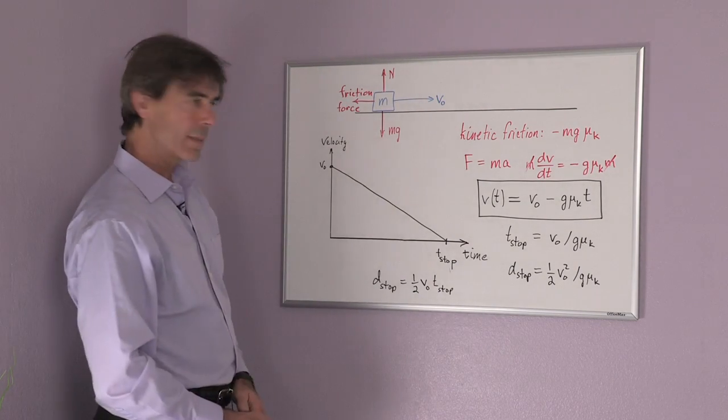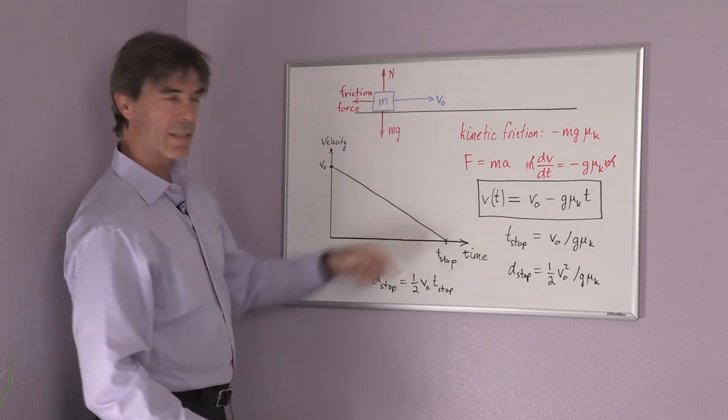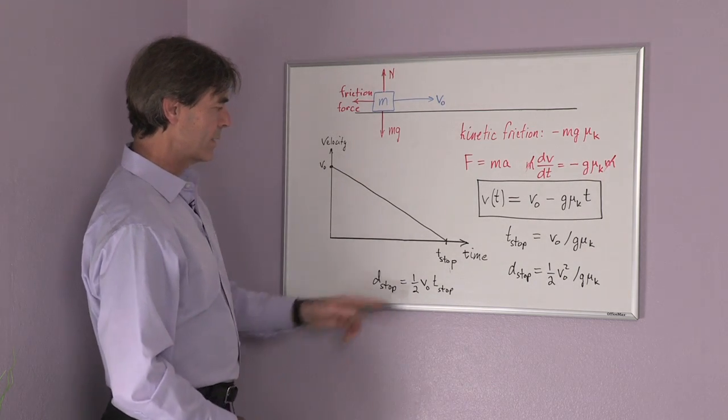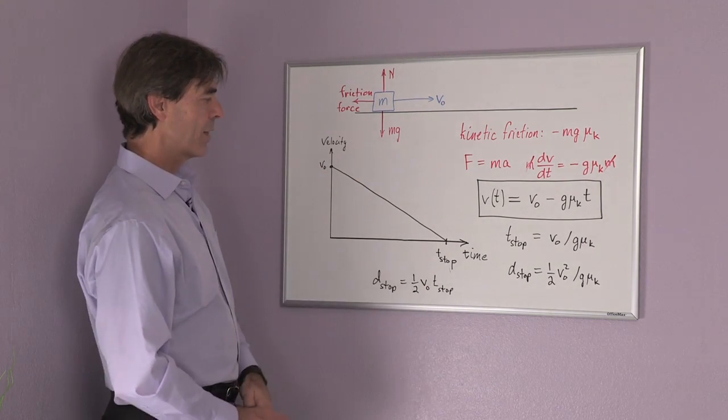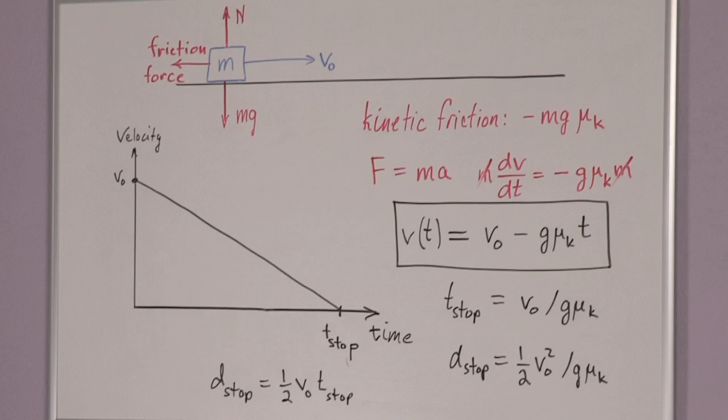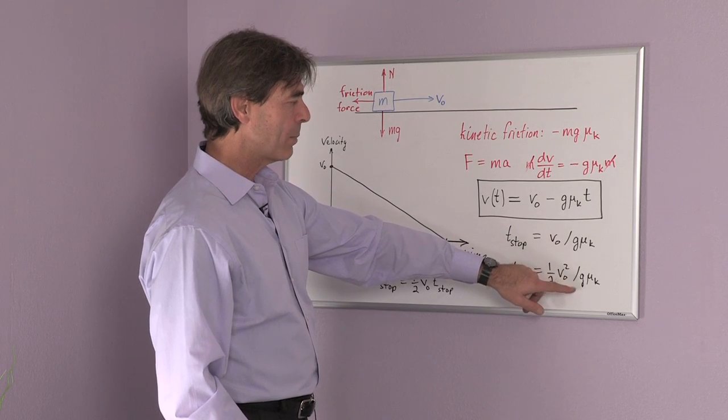We can also determine the stopping distance. That's simply the area of the velocity versus time curve. Since this is a triangle, it's one half the initial velocity v0 times the stopping time t-stop. Putting this together, we can substitute t-stop into the formula, and we have a stopping distance d-stop equals one half v squared divided by the product of gravitational acceleration g times the coefficient of kinetic friction.